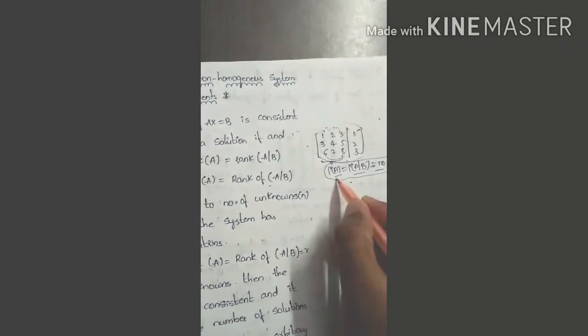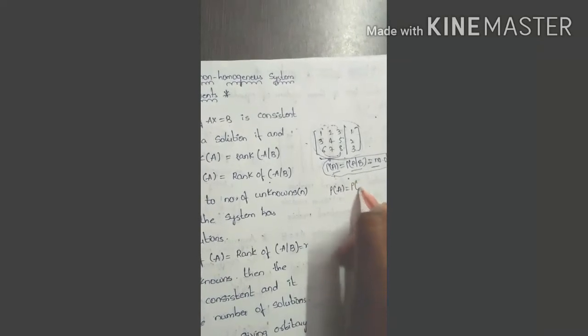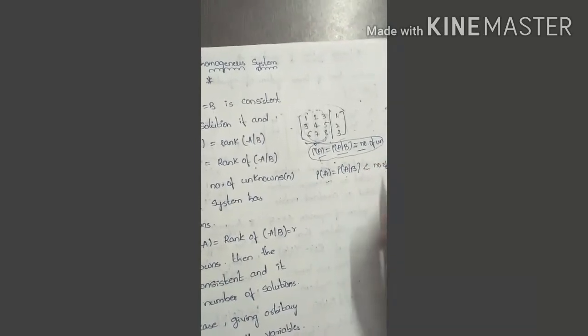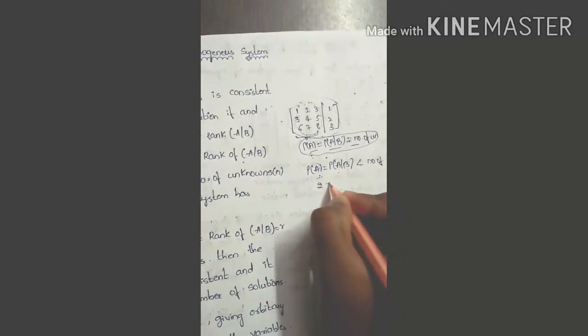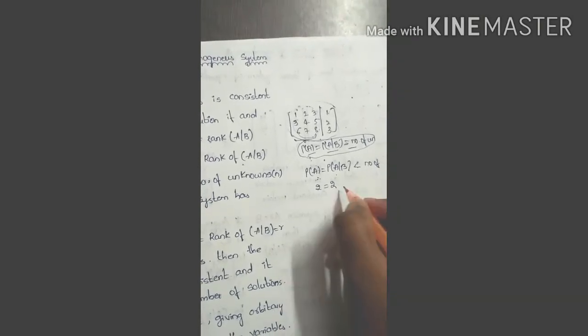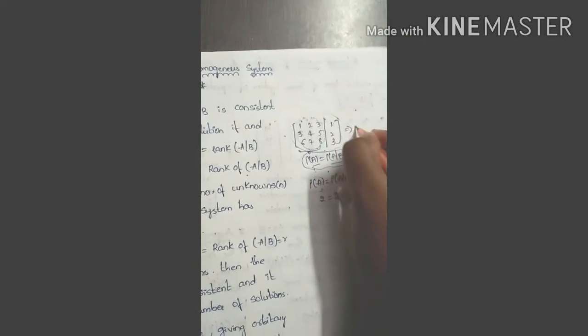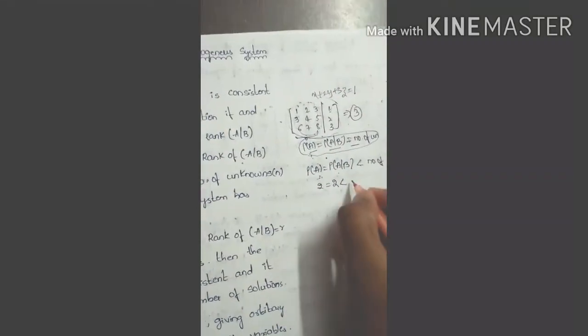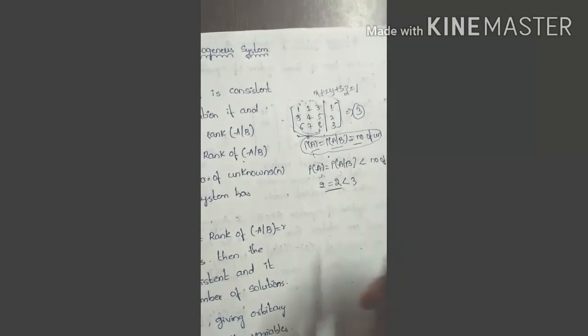In the same case, if rank of A equals rank of [A|B] but this rank R is less than the number of unknowns, we have infinitely many solutions. For example, if rank of A is 2 and rank of [A|B] is 2, but the number of unknowns is 3 — such as x, y, z in equations like x + y + z = 1 and x + 2y + 3z = 1 — then the rank is less than the number of unknowns.